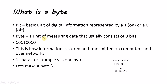A byte is a unit of measuring data that usually consists of 8 bits. So if there are 8 ones and zeros, that's a byte. This is how information is stored and transmitted on computers and over networks. A quick example of what would be a byte long is a character — the letter V is one byte long. For the computer to be able to give you the letter V, or any letter or any character on your screen, it takes a byte of information.